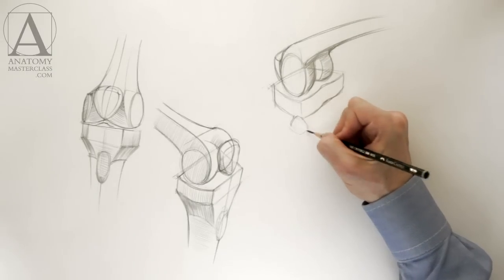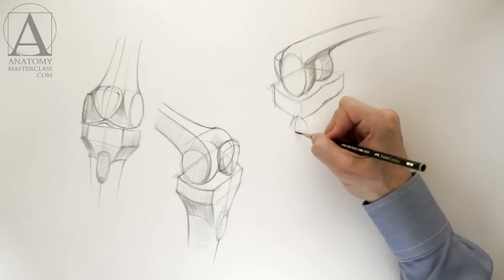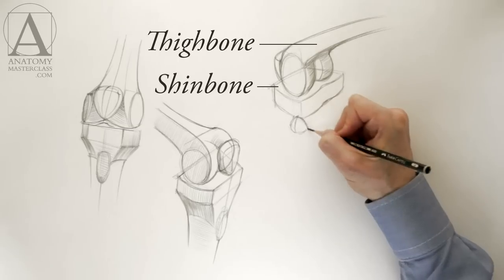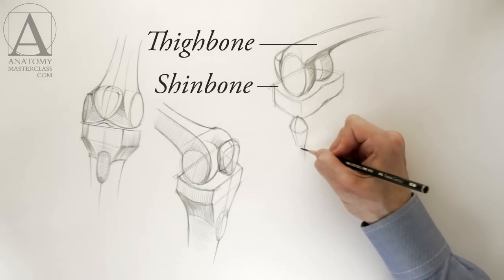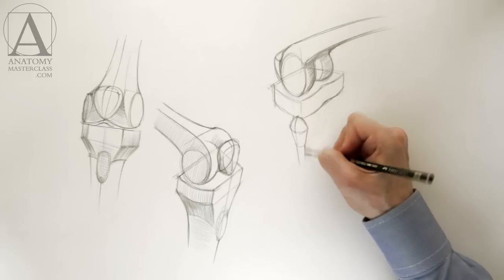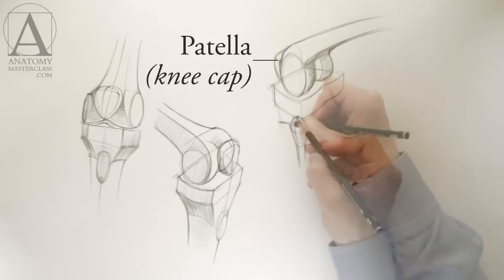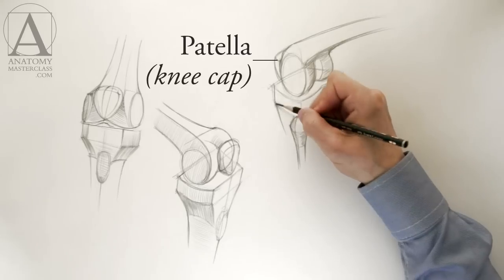On this sketch, the leg is also bent. In the joint, the flat surface of the shin bone is rotated around the cylindrical surface of the thigh bone. In front, just above the shin bone, there is the kneecap or patella.